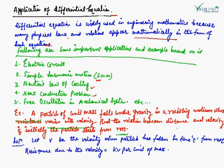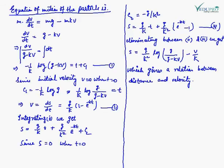Suppose that V is velocity when the particle has fallen at time t from rest. The resistance due to velocity is KV per unit of mass, where K is a constant and V is velocity. V is the velocity when the particle has fallen distance S at time t from rest, so the initial velocity is 0 when time is also 0.